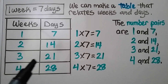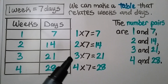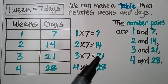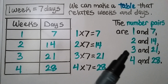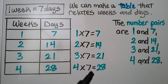Three weeks is 21 days — that's three times seven — so our number pairs are three and 21. Four weeks is 28 days, which is four times seven, so our number pairs are four and 28.